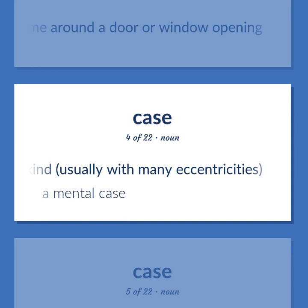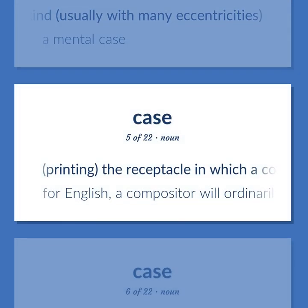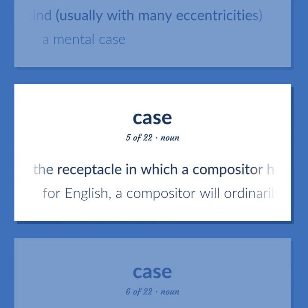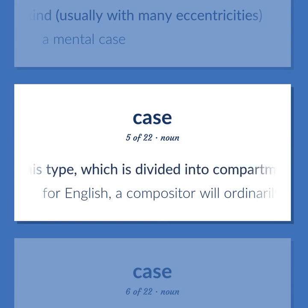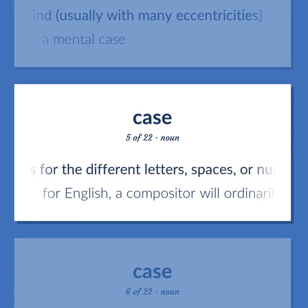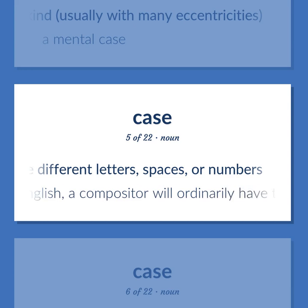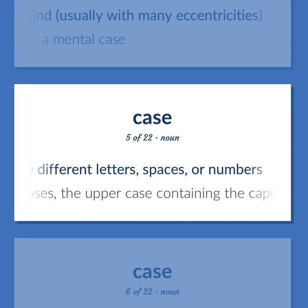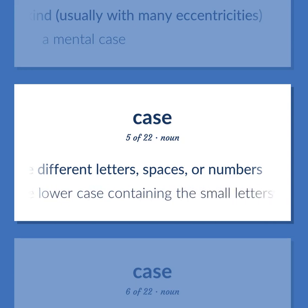A mental case. (Printing) The receptacle in which a compositor has his type, which is divided into compartments for the different letters, spaces, or numbers. For English, a compositor will ordinarily have two such cases — the uppercase containing the capitals and the lowercase containing the small letters.